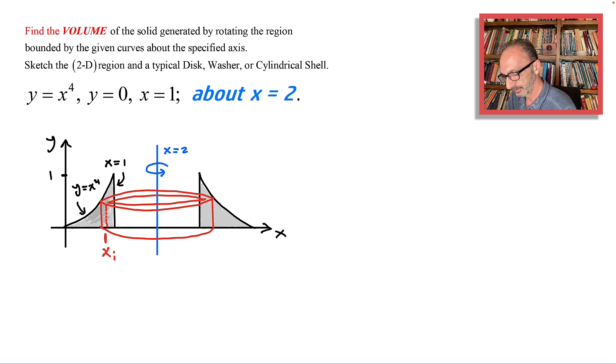To get started we could write the volume equals from a to b, 2 pi x times f of x dx, where f of x is the height, 2 pi x will be the circumference, and delta x will be the thickness. This portion right here shows that we do have a delta x.